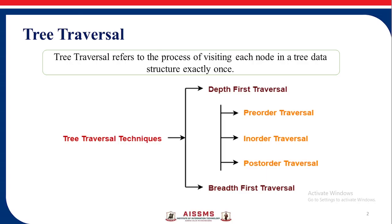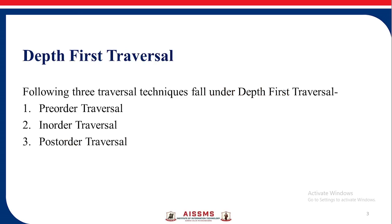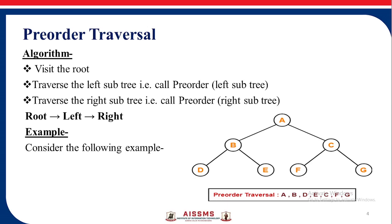Tree traversal refers to the process of visiting each node in a tree data structure exactly once. The tree traversal techniques are Depth First Traversal and Breadth First Traversal. The following three traversal techniques fall under the Depth First Traversal: first is pre-order traversal, second is in-order traversal, and third is post-order traversal. Now we are going to see the pre-order traversal and examples on it in this video.